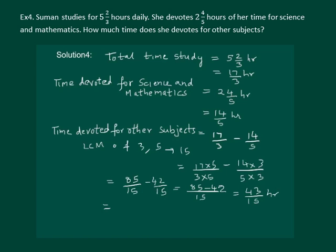We can convert this into mixed fraction and get the answer as 2 and 13 by 15. Hence, the total time devoted by her for the other subjects is 2 and 13 by 15 hours.